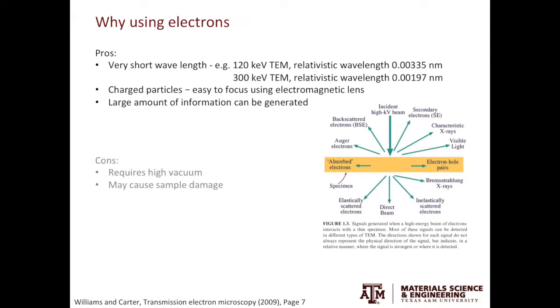Like all coins have two sides, by using electrons we also face some challenges. The first issue is that TEM requires very good vacuum. This is because the presence of air molecules in the column can scatter electrons. If we use X-ray again for the comparison, X-ray does not require vacuum. The second issue is that the electron material interaction can cause damage to your sample. I will share one example with you from the textbook in a couple slides.